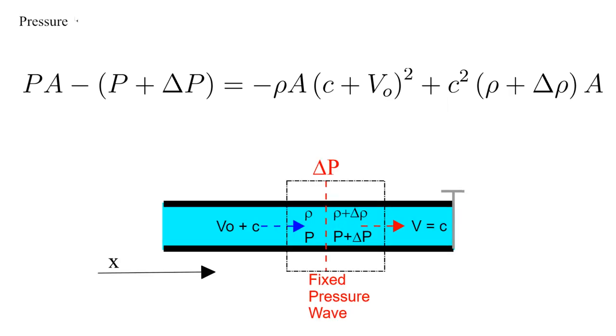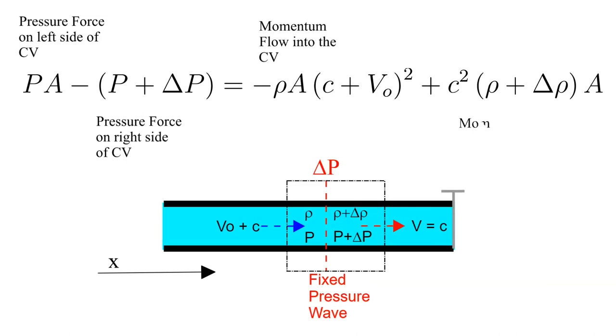Although I skipped the details, let's do a review. The first term is the external pressure force acting on the left hand side of the control volume acting in the positive x direction. The second term is the external pressure force acting on the right hand side of the control volume acting in the negative x direction. The third term is the momentum inflow into the control volume and the fourth term is the momentum outflow from the control volume.